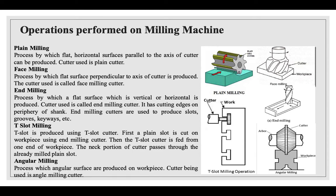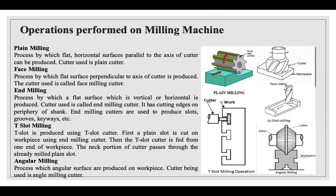Operations performed on a milling machine include: plain milling, which produces flat horizontal surfaces parallel to the axis of the cutter using a plain cutter; face milling, which produces a flat surface perpendicular to the axis of the cutter using a face milling cutter; and end milling, which produces a flat surface that is vertical or horizontal using an end milling cutter that has cutting edges on the periphery of the shank. End milling cutters are used to produce slots, grooves, keyways, etc.